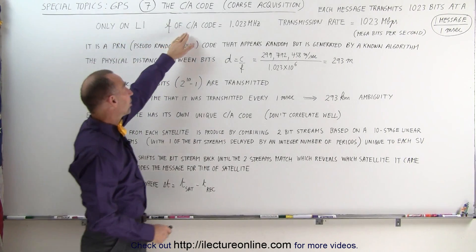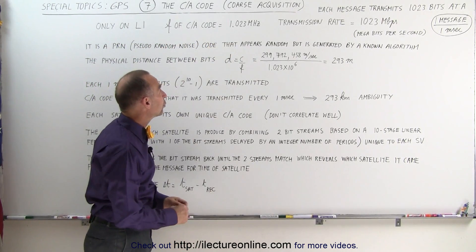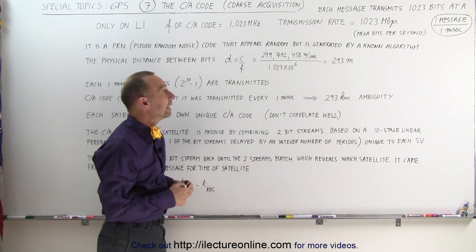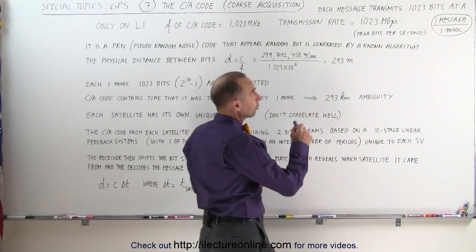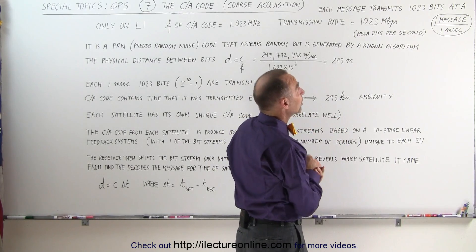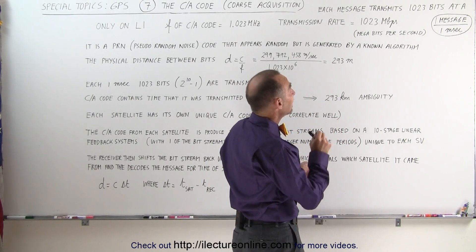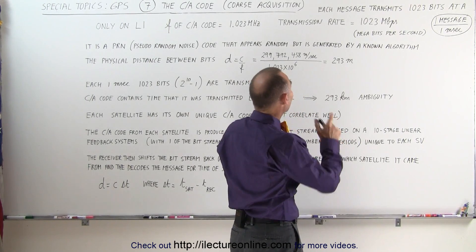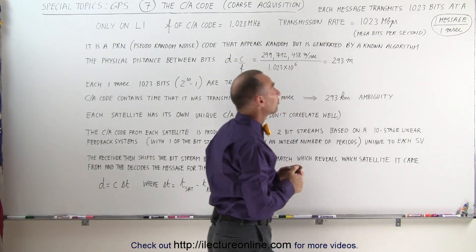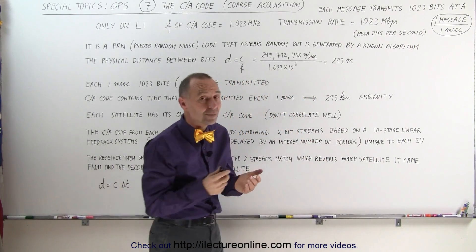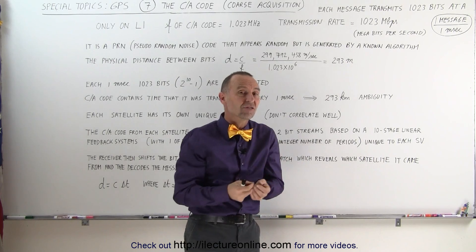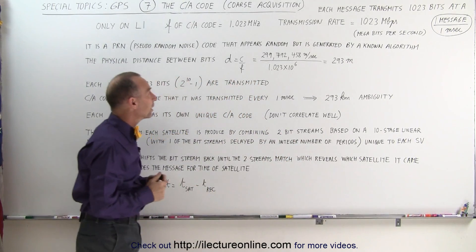The frequency of the CA code is 1.023 megahertz and the transmission is exactly 1023 bits on each transmission at a transmission rate of 1.023 megabits per second, which means that every millisecond a message is sent with 1023 bits.